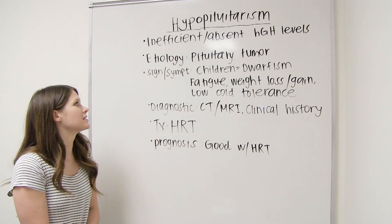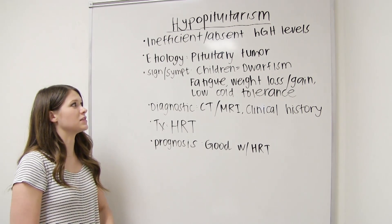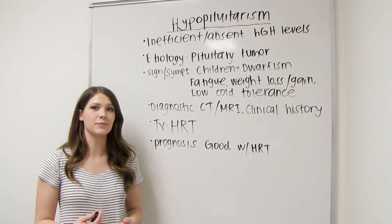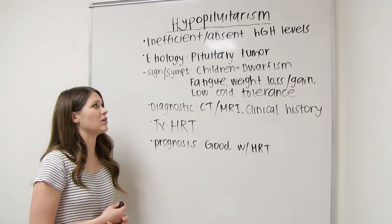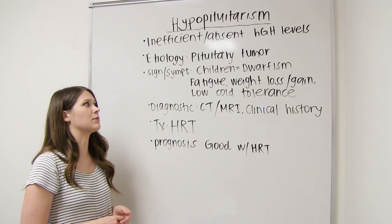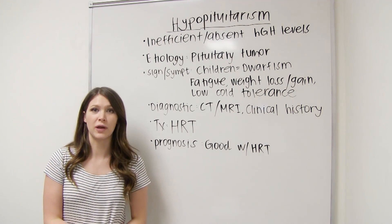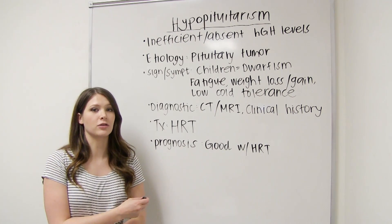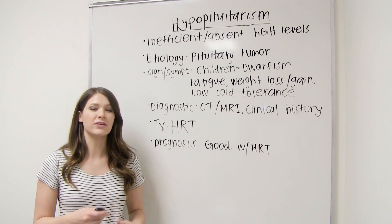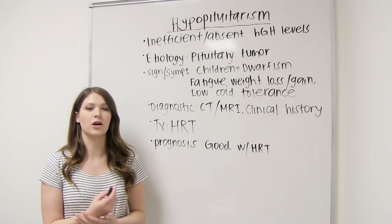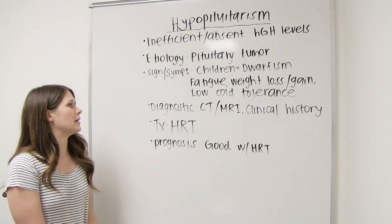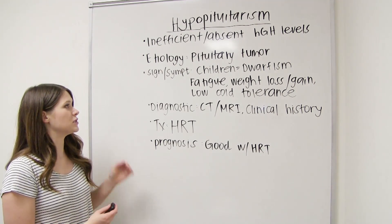Signs and symptoms in children include dwarfism. In adults, they will have fatigue, weight loss or weight gain, and low tolerance to cold. These symptoms are often easily overlooked because they develop over time.